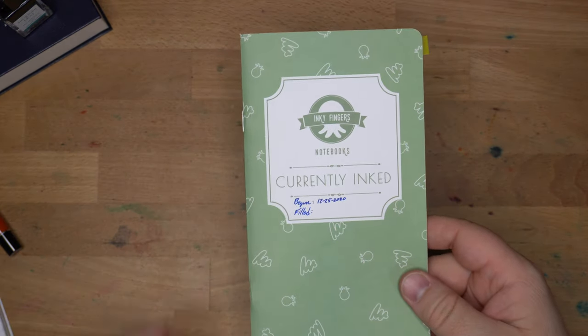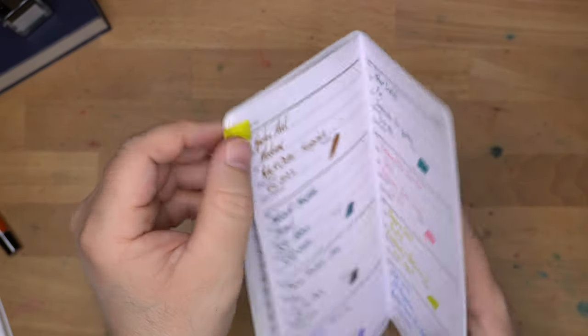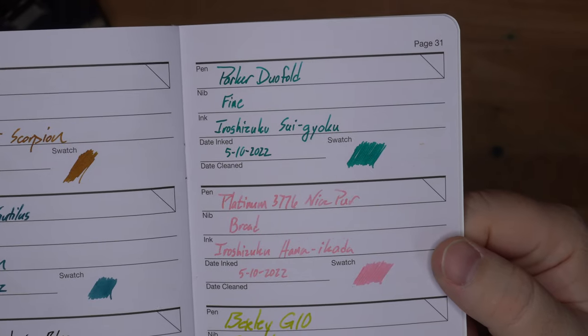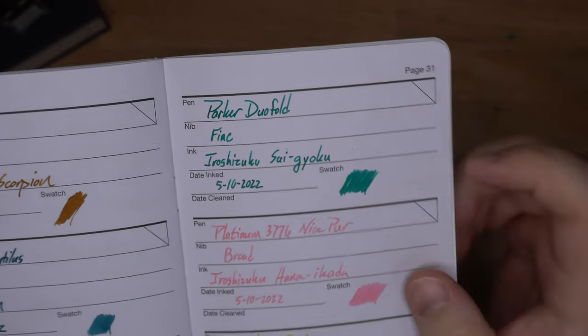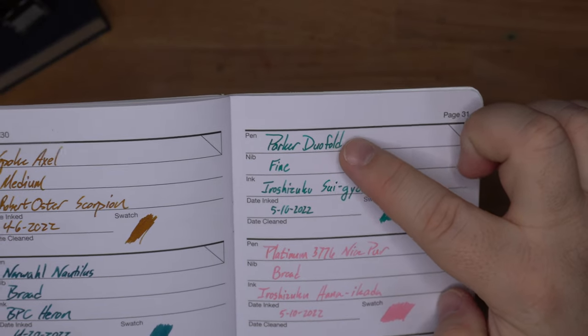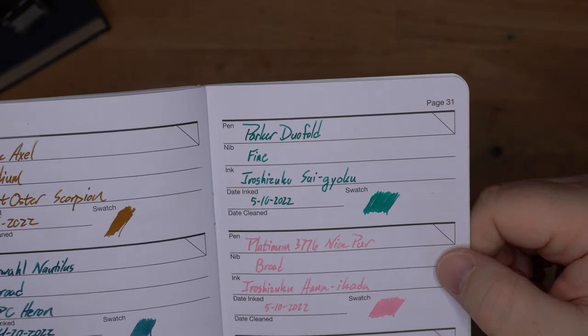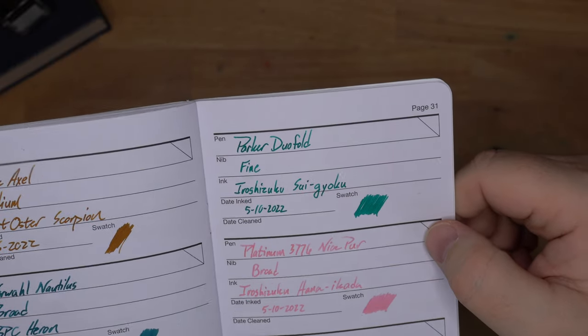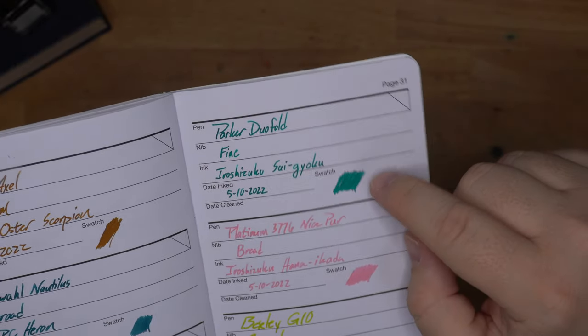Here is some wheat straw paper. This is an Inky Fingers currently inked. Iroshizuku Suigayoku. I think it looks really good on this paper. You get some of that blue character up here in the tips. It looks like it kind of shades to blue, which is an interesting effect. I hadn't really noticed that before until just now, and I like that a lot. That's looking good.